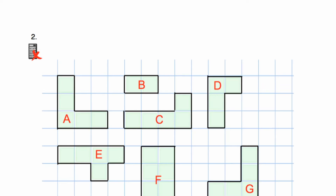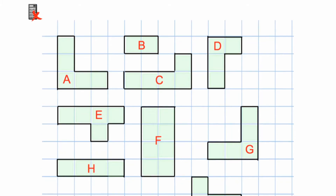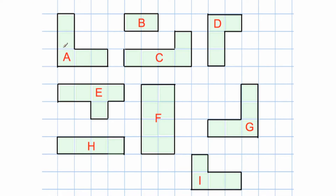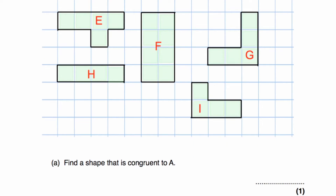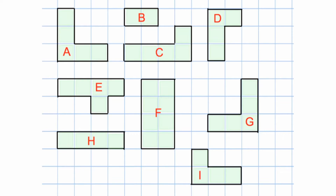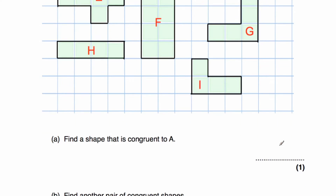Let's have a look at question number two. We've got this grid with shapes A, B, C, D, E, F, G, H, I. Part A says: find a shape that is congruent to A. A looks like an L-shape going down and then across. G is congruent to A — they're the same shape and the same size. So A and G are congruent to each other.